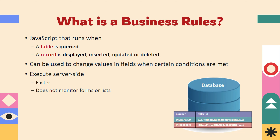What is a business rule? It is a type of JavaScript that runs when a table is queried, when a record is inserted, updated, deleted, or displayed. It can be used to change values in fields when certain conditions are met. It executes on the server side, which is usually faster.